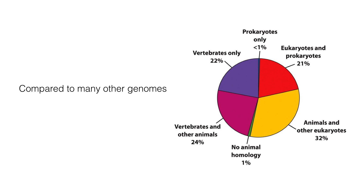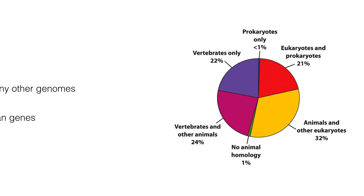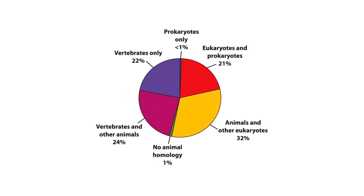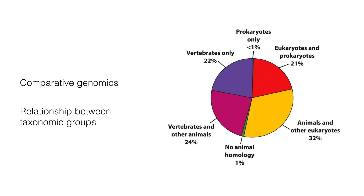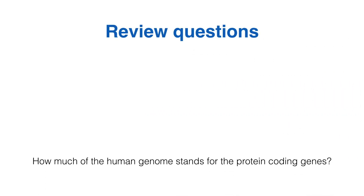Once functional elements are annotated, they can be compared to many other organisms and help annotate their genomes. Human genes can be compared to genomes of other organisms as far as prokaryotes, and we can see that only about 1% of our genes have no known homologies, meaning they are unique to humans. This will begin a study called comparative genomics, which is a field defined as comparing the nucleotide sequences of genomes. It can provide new information about relationships between various taxonomic groups, but that will be a topic of one of the future lectures.